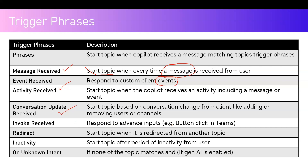Invoke Received is about responding to advanced input. For example, if you've deployed your bot to Microsoft Teams and you want to respond to a button click, you can use the Invoke Received trigger. Redirect is used when you are in a specific topic and want the conversation redirected to another topic — this is mostly used when you want to escalate a conversation.